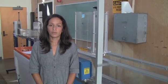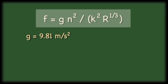The friction factor is equal to one eighth of the Darcy-Weisbach friction factor. It is equal to g n squared over k squared R to the one third. In SI units G is equal to 9.81 meter per second squared and K is equal to one.